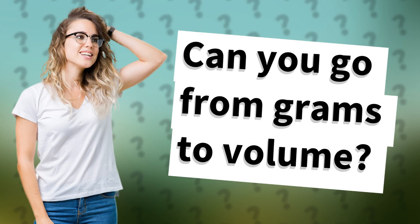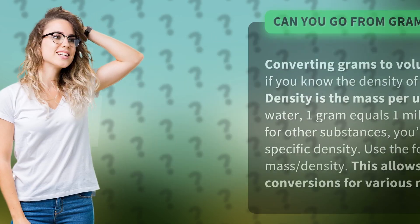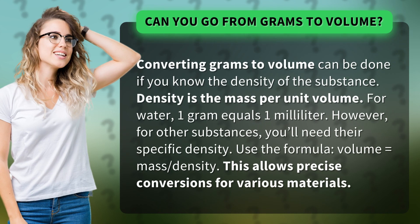Can you go from grams to volume? Converting grams to volume can be done if you know the density of the substance. Density is the mass per unit volume. For water, one gram equals one milliliter. However, for other substances, you'll need their specific density.